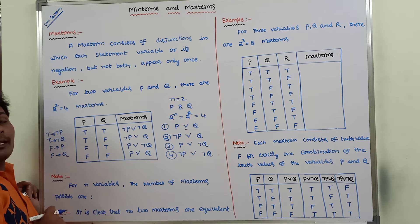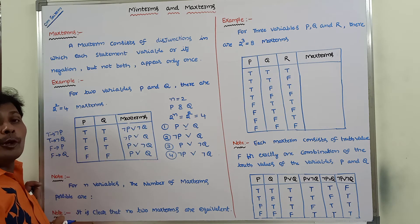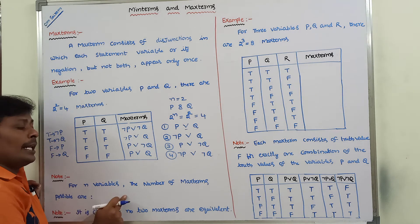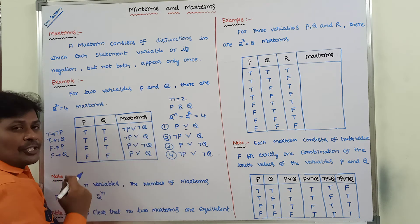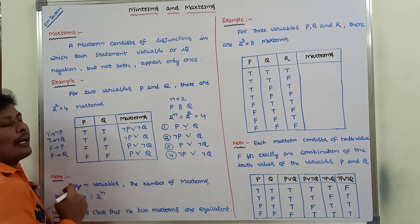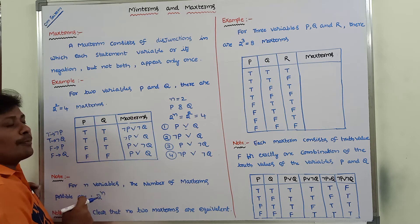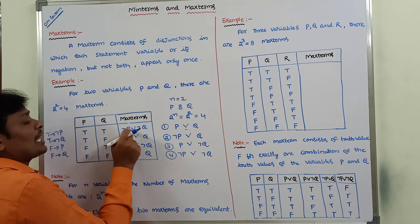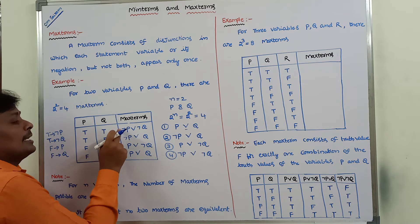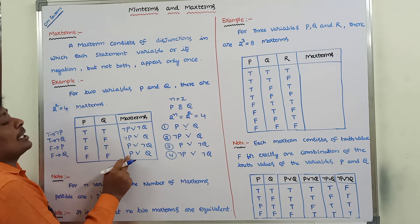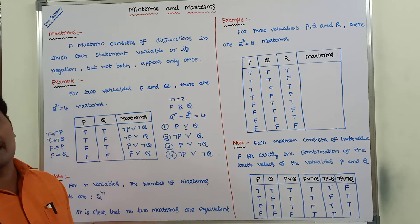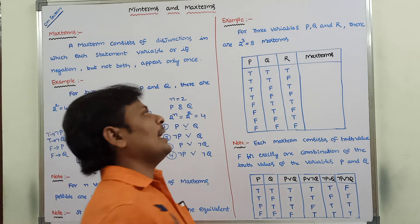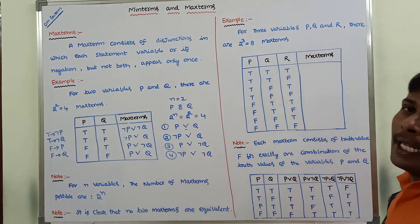For two variables n equal to 2, four max terms are possible. For n variables, 2 power n max terms are possible. Observe these four max terms: no two max terms are equal. Each max term is distinct from every other. Similarly, no two min terms are equal.